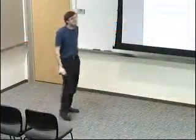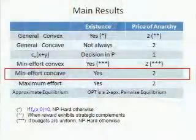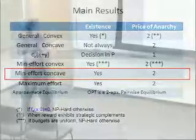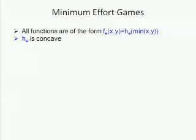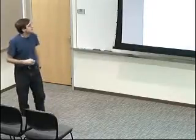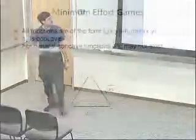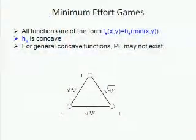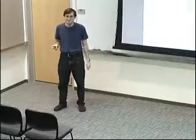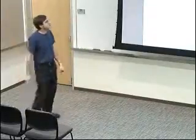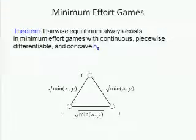For the minimum effort concave case: if you have general concave functions like square root of xy, there may be no pairwise equilibrium — you can verify on a simple triangle. But for minimum effort concave functions, like square root of min(x, y), there's always a pairwise equilibrium. For the triangle, it's trivial: just spread effort half-half. Every person puts half-half effort.